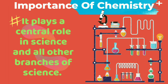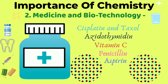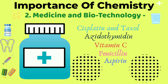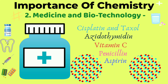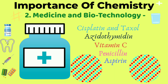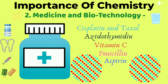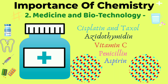Chemistry has a wide range of importance in our daily life and plays a central role all over the world. First, it plays an important role in our need for food. It is also used in medicine and biotechnology. Many drugs like cisplatin, taxol, azidothymidine, vitamin C, penicillin, and aspirin are manufactured using chemicals for the treatment of various diseases.